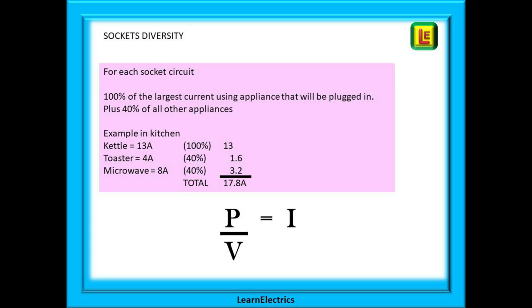If we look at the sockets, and it doesn't matter if it's a ring circuit or a radial circuit, follow the same method. Take each socket circuit separately. Decide for that circuit which piece of equipment will use the most power and take 100% of this value. Then determine what else is most frequently plugged in and used, and allow 40% for each of these. Low power appliances that are used very infrequently can be left out.